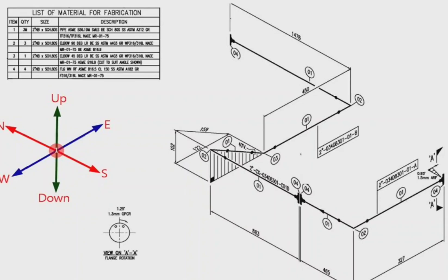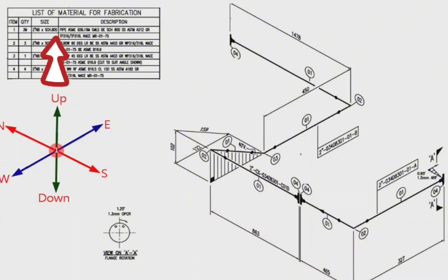Let's start the video. This is a pipe isometric drawing. This is the list of material for fabrication. In this drawing there are two separate pipe spools. This is the first spool. This is the second spool.